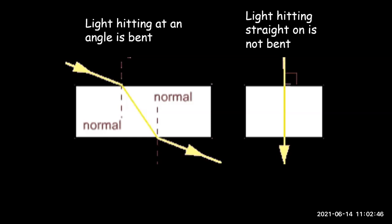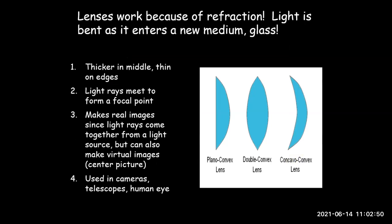Lenses work because of refraction — light is bent as it enters a new medium. There are two main types of lenses: convex and concave. Convex lenses have three subtypes: plano-convex, double-convex, and concavo-convex. They are thicker in the middle and thinner on the edges.